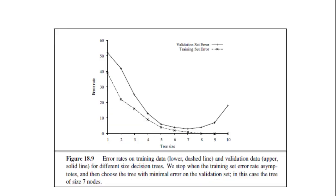Looking at typical error rate curves: the training set error decreases monotonically, while the validation set error decreases at first then increases when the model begins to overfit. The cross-validation procedure picks the value of size with the lowest validation set error, at the bottom of the U-shaped curve, and then generates a hypothesis of that size using all the data.